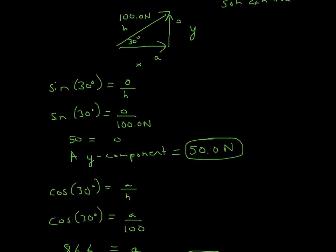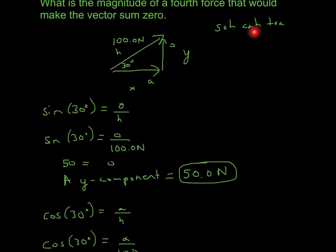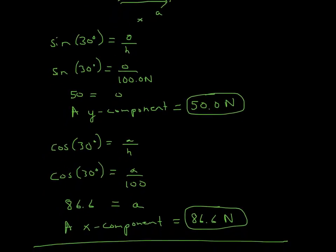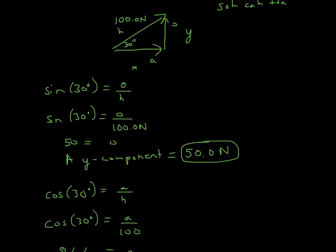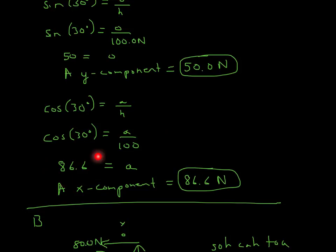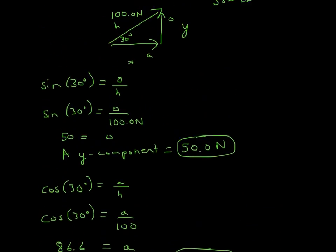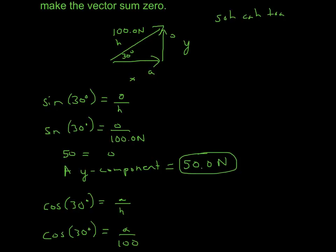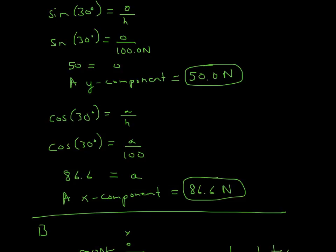Now I'm solving for the x-component using cosine, since the x-component is adjacent over hypotenuse — that's cosine. Cosine of 30 degrees equals adjacent over hypotenuse, so we plug in the hypotenuse of 100: cosine of 30 equals adjacent over 100. Multiplying each side by 100, we get 86.6 equals adjacent. Adjacent is the x-axis, so the x-component of A is 86.6 Newtons. I put three sig figs as the norm, and the units are Newtons.